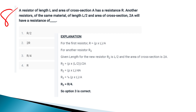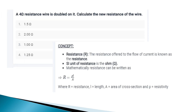A wire of the same material has length L/2 and cross-sectional area 2A. The original resistance is R = ρL/A. For the new wire: R2 = ρ·(L/2)/(2A) = ρL/(4A) = R/4. So the answer is R/4.